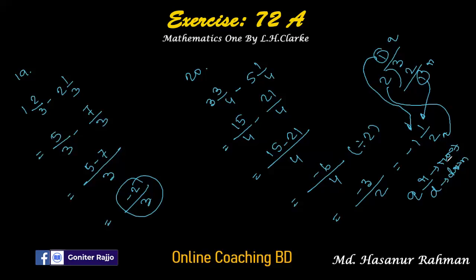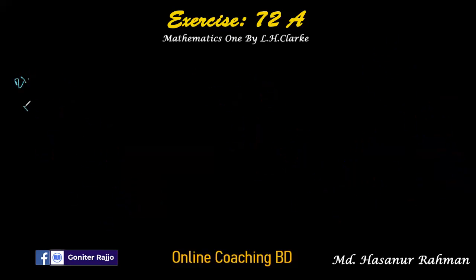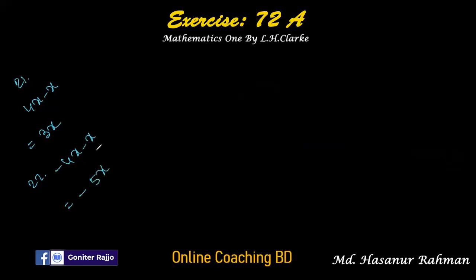Number twenty-one: 4x minus x is 3x. Number twenty-two: minus 4x minus x. The symbol of 4x and x are both the same, so we add: 4x plus x is 5x, and the symbol is negative, so the answer is minus 5x.